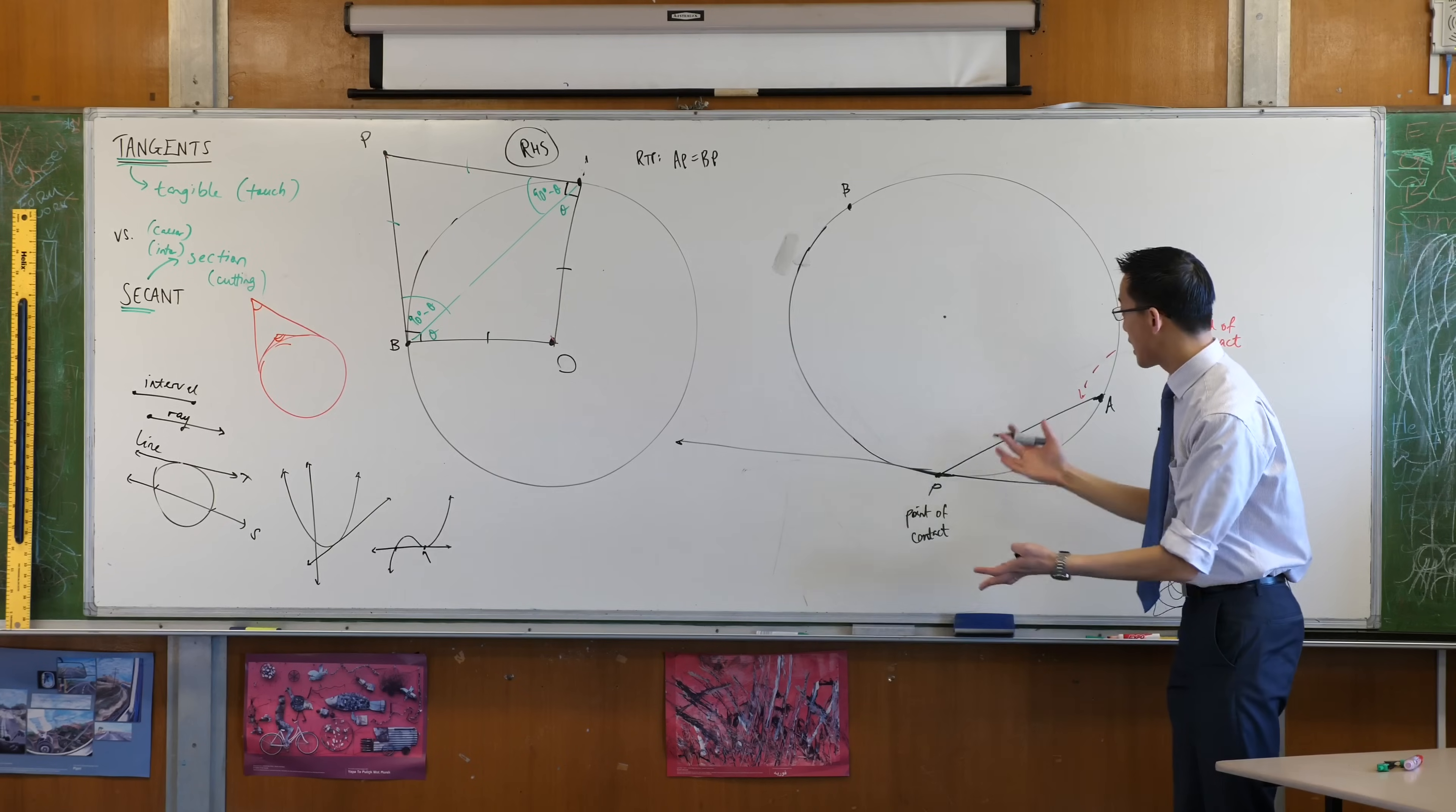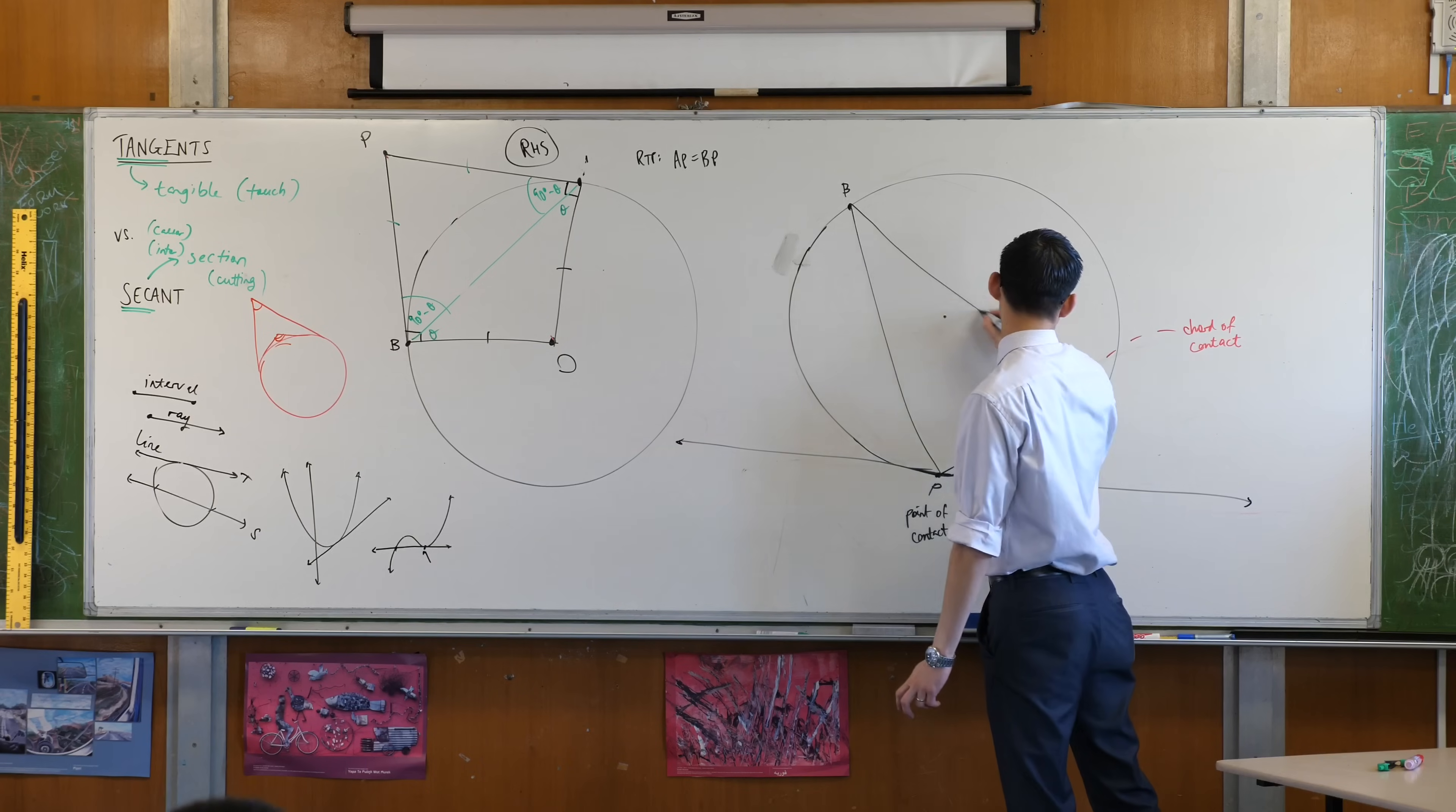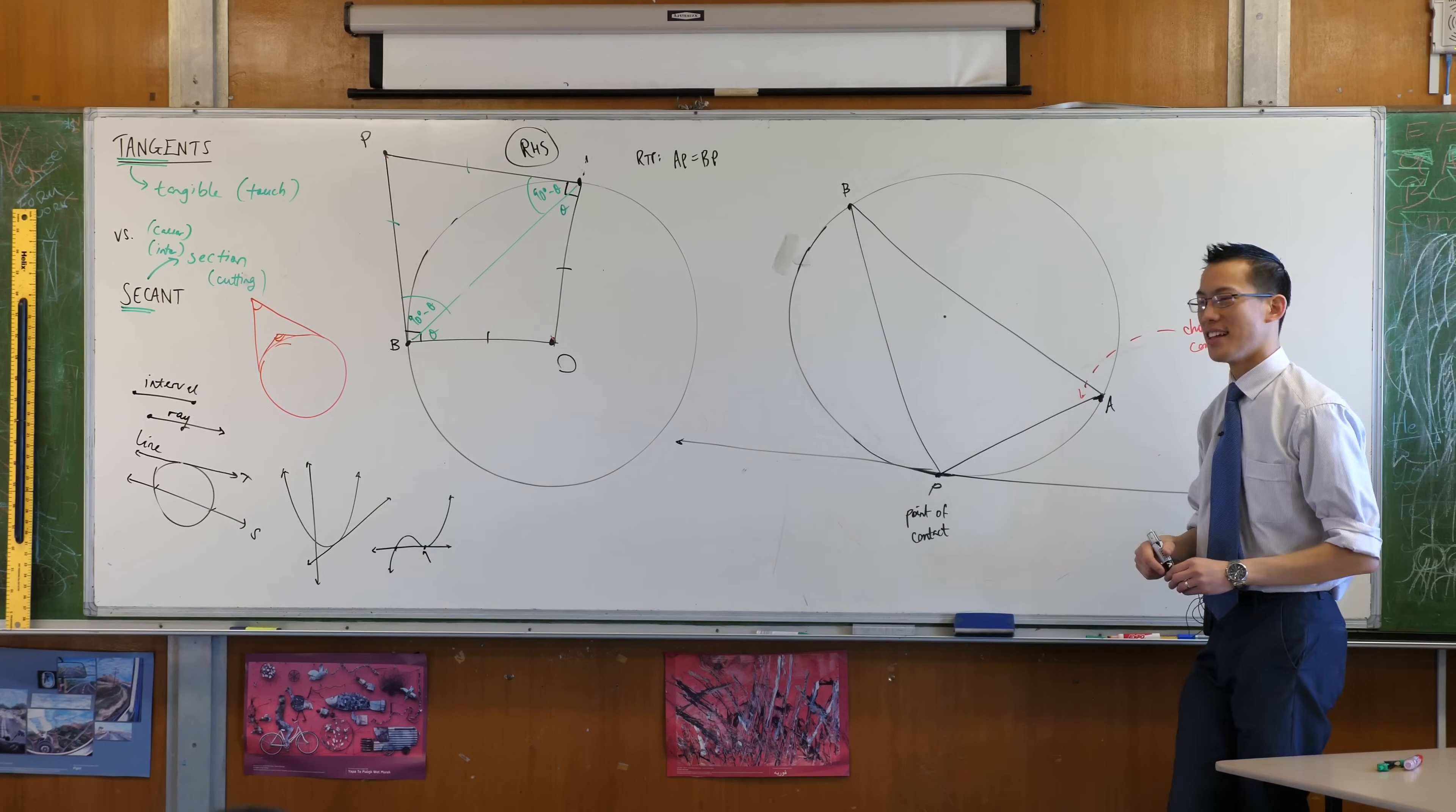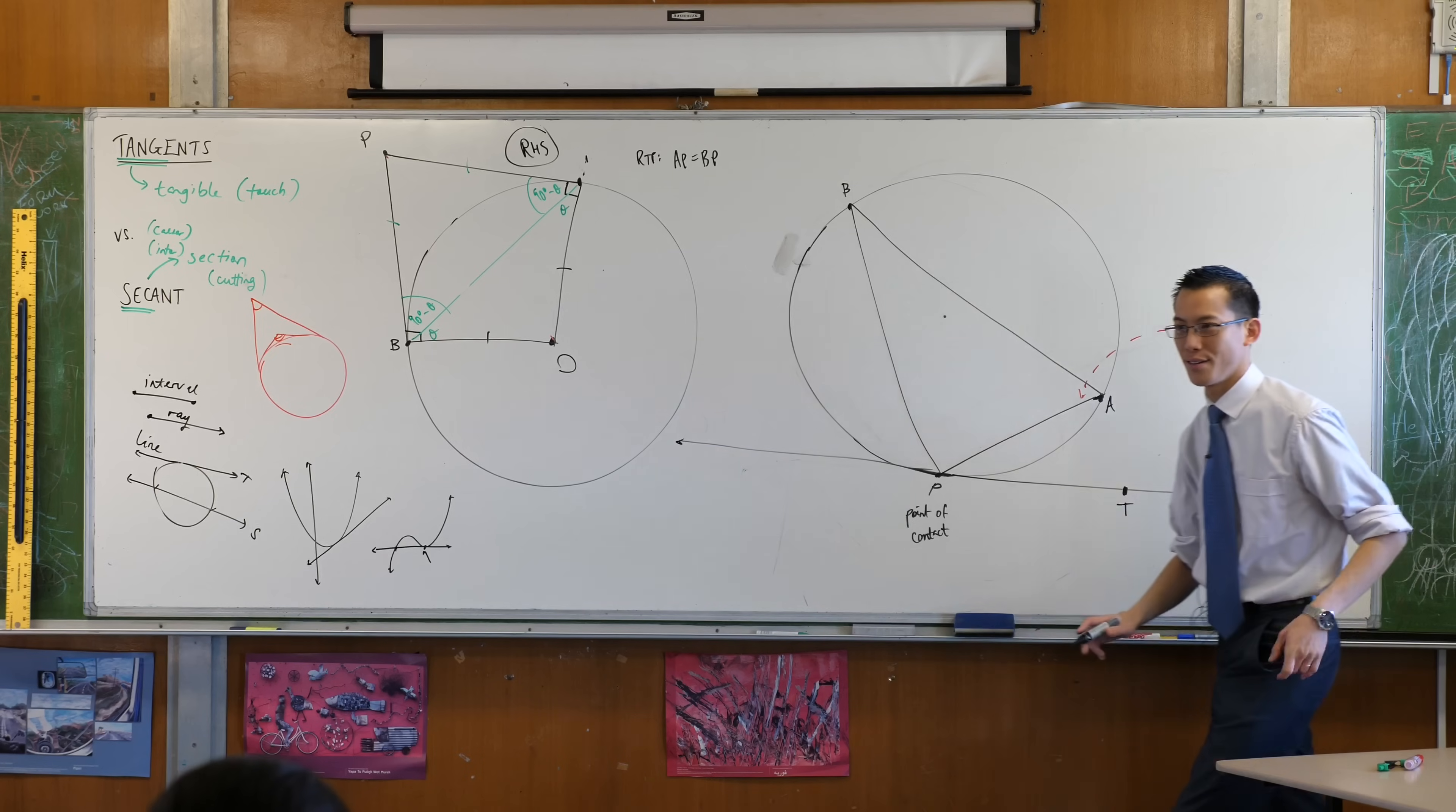Pick that point and then I want you to join up ABP, join up that angle on the circumference. The last thing you'll need is just another point on this side, just so we can talk about it, not to do any more constructions. Because it's on the tangent, I'm going to call this guy T for tangent.